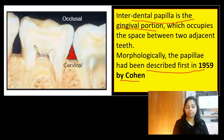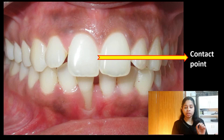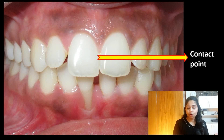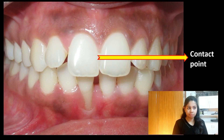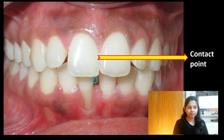Coming on to an important term: the contact point. The contact point is the point where two adjacent teeth meet. For example, for two maxillary incisors this would be the point of contact where they meet each other. If we look at these mandibular incisors, there is no point of contact between them, and thus there is spacing between the teeth.